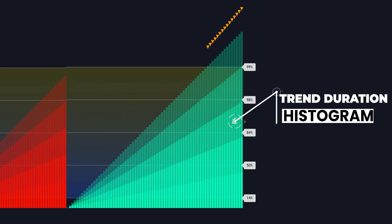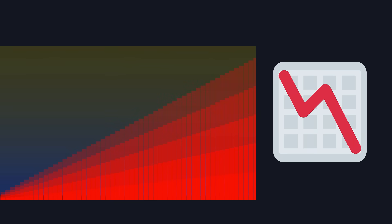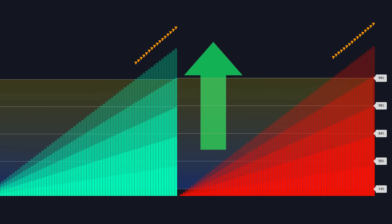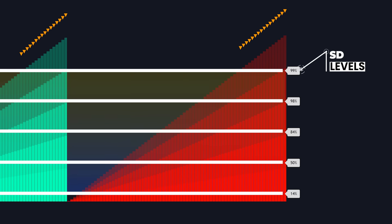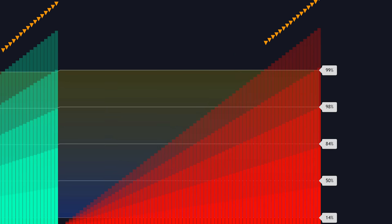The first key component is the trend duration histogram, which represents trend duration in terms of statistical probability. When you see a green histogram, that's indicating an uptrend is in progress. Red histograms show you that a downtrend is currently dominating the market. This histogram can extend as high as mathematically possible — the longer it extends upward, the longer that particular trend has persisted beyond normal statistical ranges. As these bars approach the higher probability zones, the likelihood of a trend reversal increases dramatically.